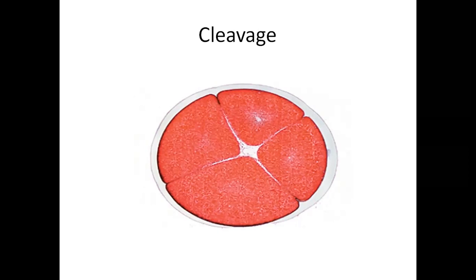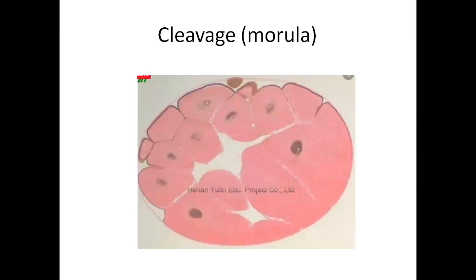Mendak mein pehla vibhajan - first cleavage - nishechana ke dhai se teen ghante ke baad prarambh hota hai. Iske andar pehle do cells bante hain, jinko ki hum blastomeres kehte hain. Then we have 8 cell, then 16 cell, 32 cell stage - is prakar se different cells bante hain, blastomeres bante hain, aur isko hum cleavage kehte hain.